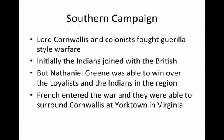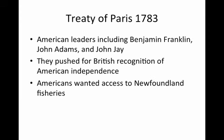The Southern Campaign: Lord Cornwallis and the colonists fought a guerrilla-style warfare in the South. Initially the Indians joined with the British, but Nathaniel Green was able to win over the Loyalists and the Indians in the region. The French entered the war and were able to surround Cornwallis at Yorktown in Virginia. This eventually led to the Treaty of Paris in 1783. The American leaders, including Benjamin Franklin, John Adams, and John Jay, attended this treaty. They pushed for British recognition of American independence and also wanted access to the Newfoundland fisheries.